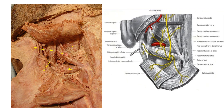The boundaries of the suboccipital triangle: superomedially, it is formed by the rectus capitis posterior major muscle — and also present is the rectus capitis posterior minor muscle. Superolaterally, the boundary is formed by the obliquus capitis superior muscle. Inferiorly, the boundary is formed by the obliquus capitis inferior muscle. These are the three boundaries of the suboccipital triangle.